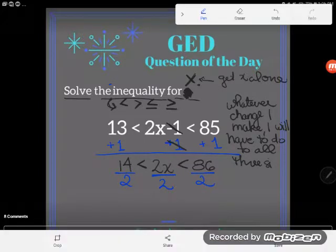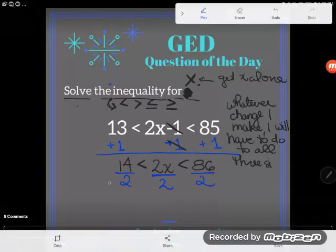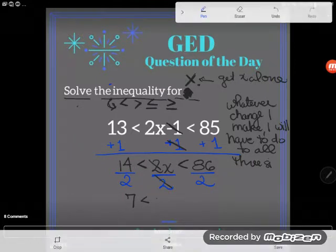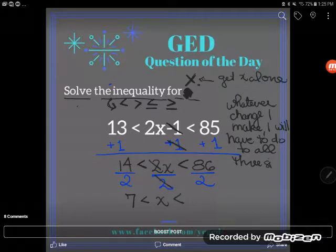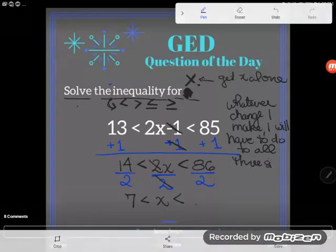So, I do it to all three of the expressions here so that my relationship will stay balanced. So, 14 divided by 2 is 7, which is less than. Multiplying by 2 and dividing by 2 cancel, leaving me with just x. When that x is less than, 86 divided by 2 is 43.